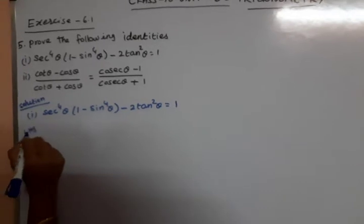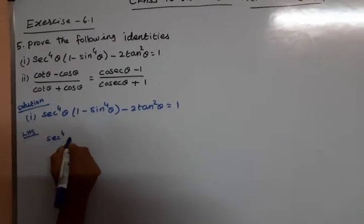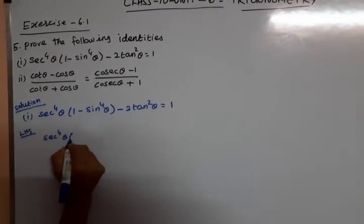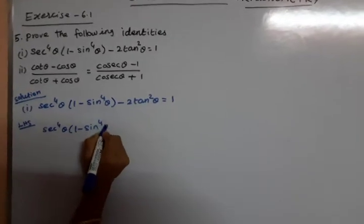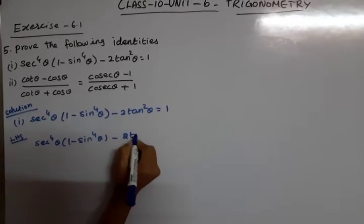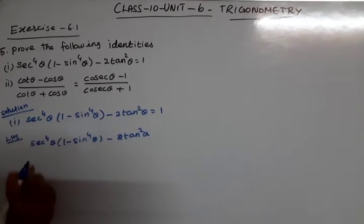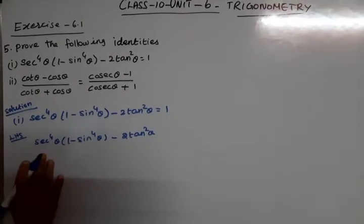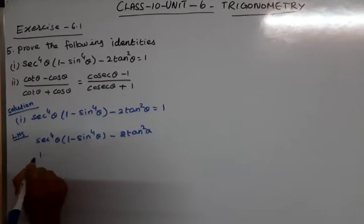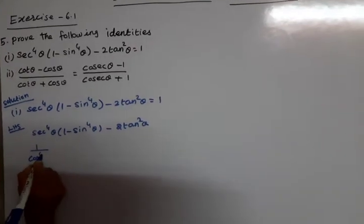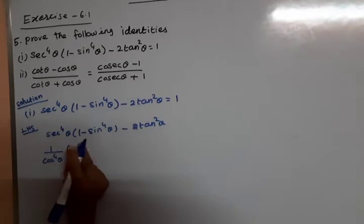So first we take LHS. We have sec⁴θ into (1 minus sin⁴θ) minus 2tan²θ. Now, sec⁴θ equals 1 divided by cos⁴θ.